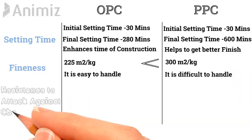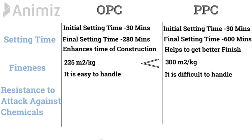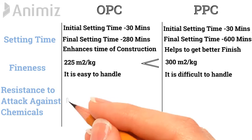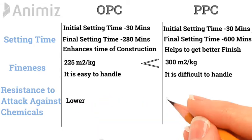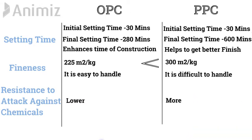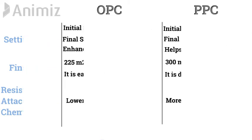Resistance to Attack Against Chemicals: In the case of OPC, resistance to attack against sulfate, alkalis, chlorides, and chemicals is lower as compared to PPC. Whereas, PPC has more resistance towards the attack of sulfate, alkalis, chlorides, and chemicals as compared to OPC.